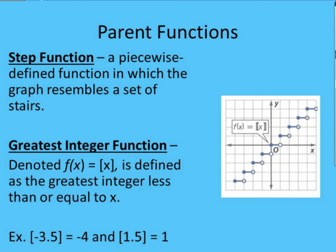So if we go to our graph and look at that on the graph, -3.5, my x value would be right here. That is going to correspond with a y value of -4, because that is an integer that is less than or equal to the -3.5.